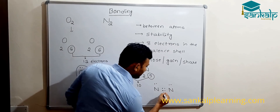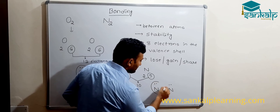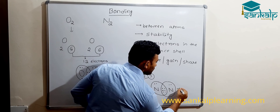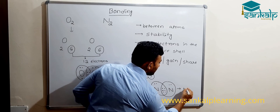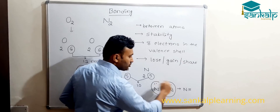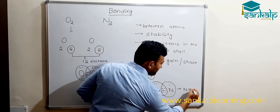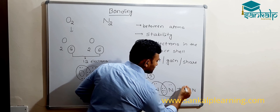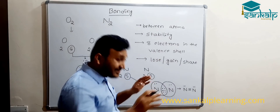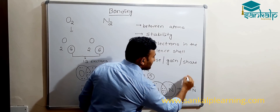Now around both nitrogen atoms it is eight. These three pairs of electrons common to both nitrogen atoms form the bond — we call it a triple bond: N≡N. Each nitrogen atom has one pair of electrons not participating in bonding — they are called lone pairs. This is what we simply write as N2.